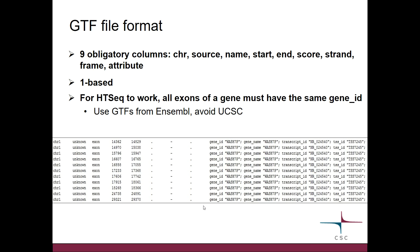HT-seq uses a BAM file and a GTF file. Chipster has many GTF files on the server, but you are also welcome to use your own. The GTF file has nine obligatory columns such as chromosome, start and end of the feature, and strand, with the last column containing lots of information like gene IDs and transcript IDs. If you use your own GTF file with HT-seq, you must ensure that all the exons of a gene are marked with the same gene ID. This is the case with GTF files from Ensembl, but not for UCSC GTF files.